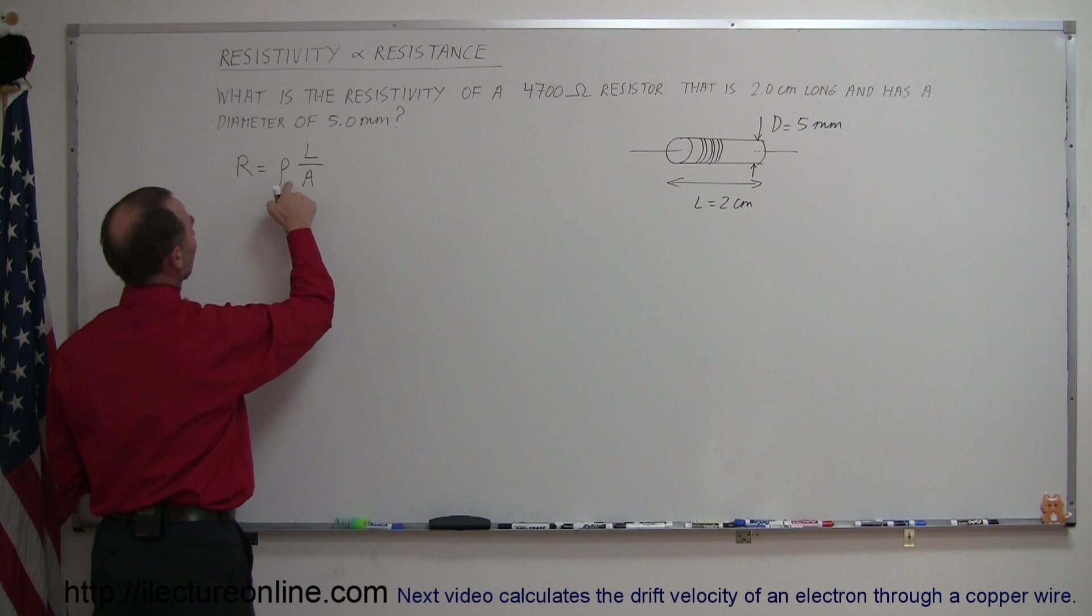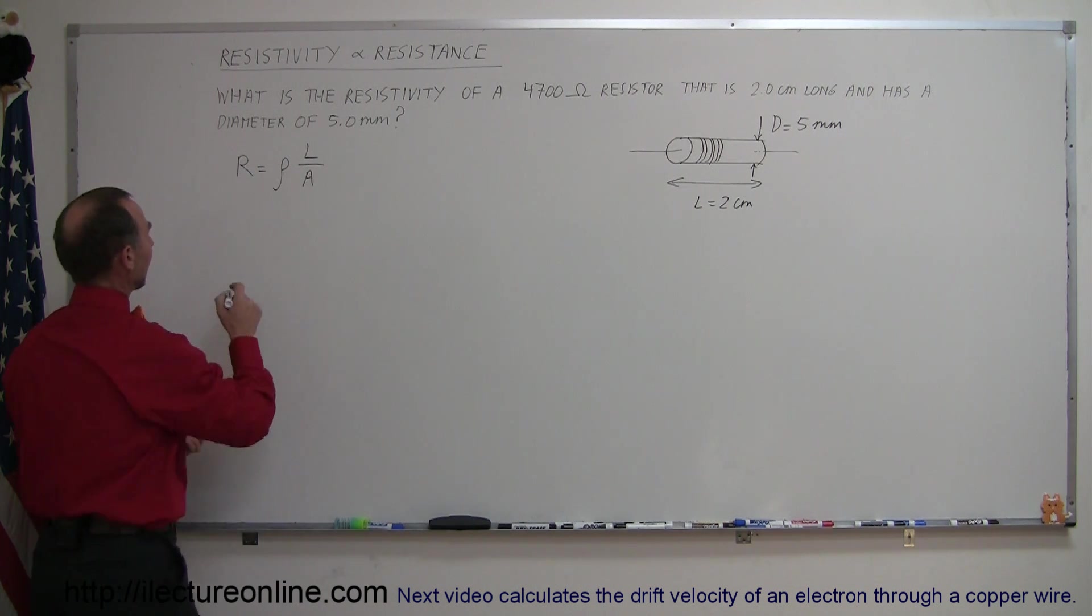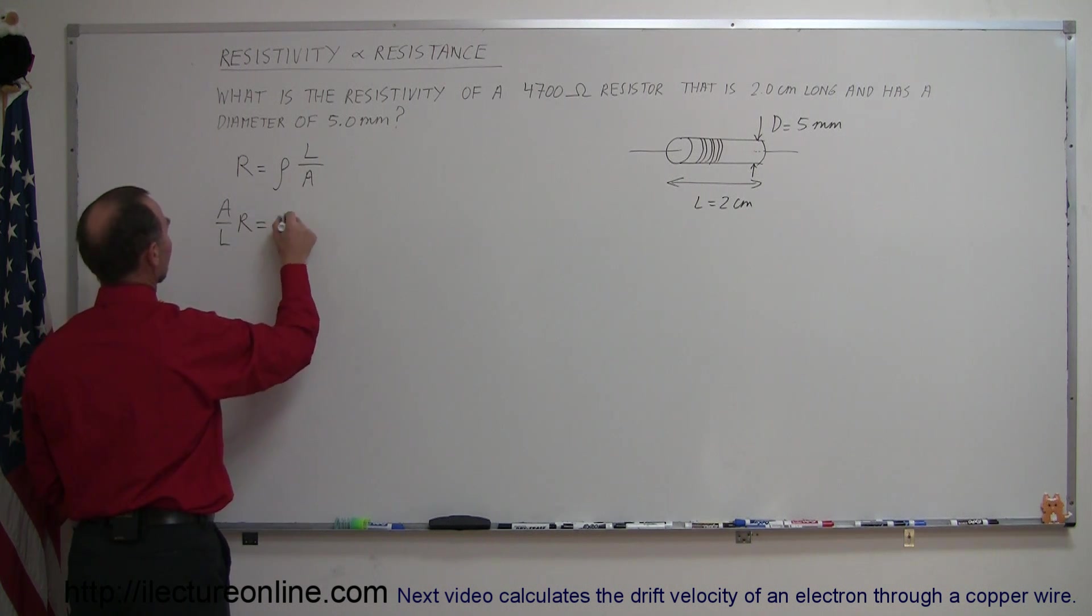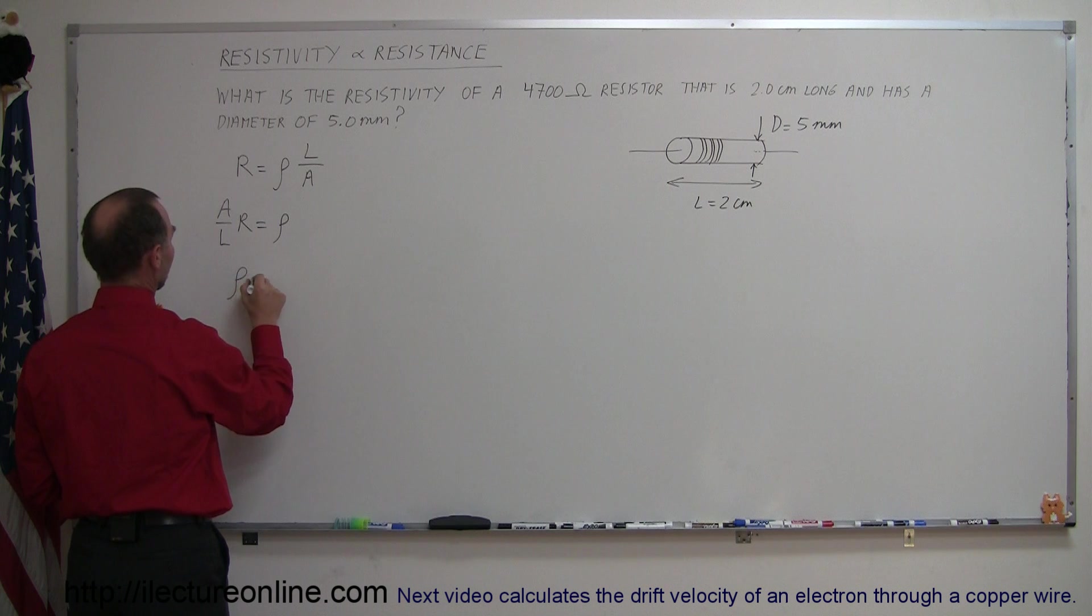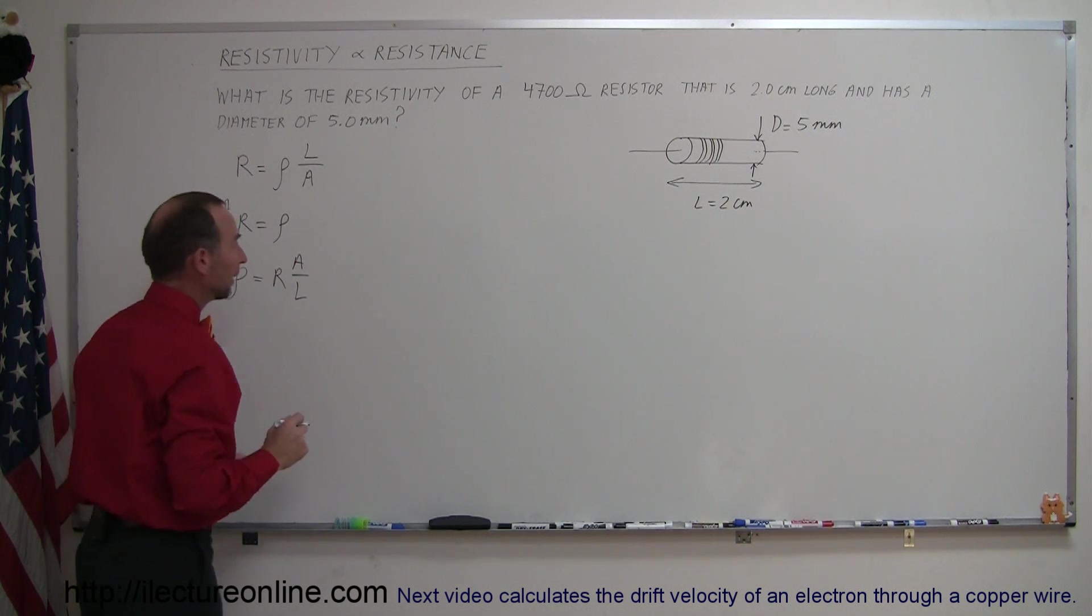So solving this for resistivity, we're going to multiply both sides by A and divide both sides by L, so we get A over L times R equals the resistivity. And turning the equation around, we get the resistivity is equal to R times A over L.